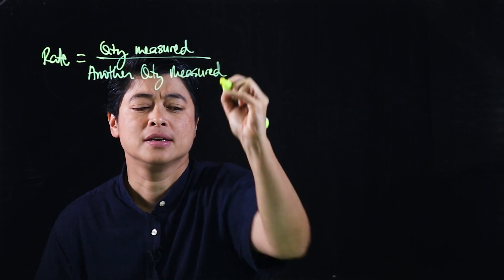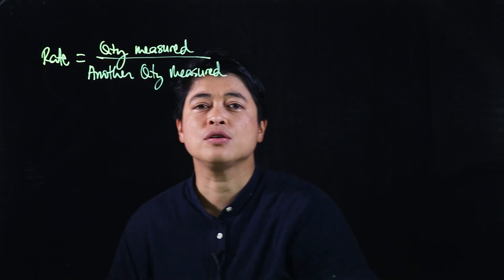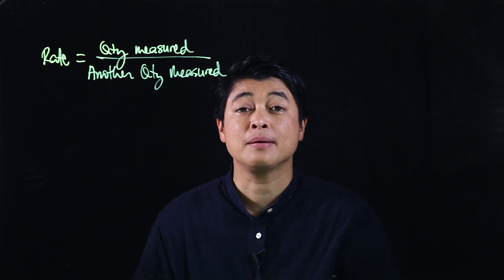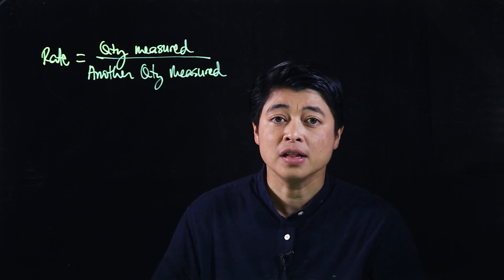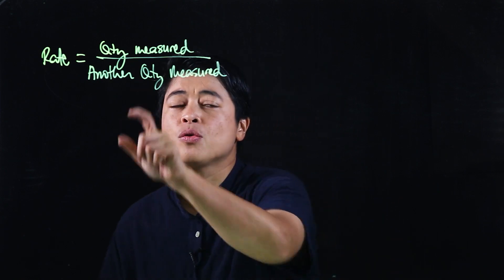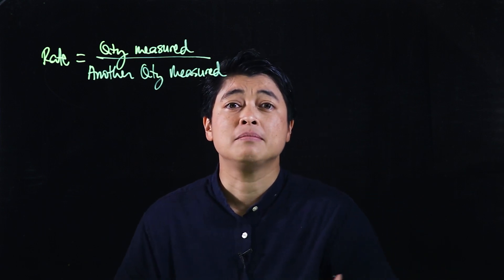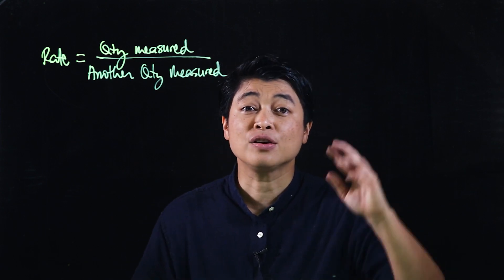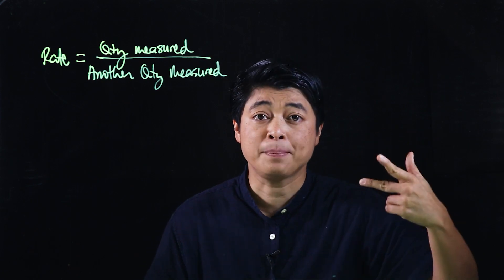What does that mean? The first quantity could be, for example, the length, the mass, the volume, and the second quantity could be time or it could be money.